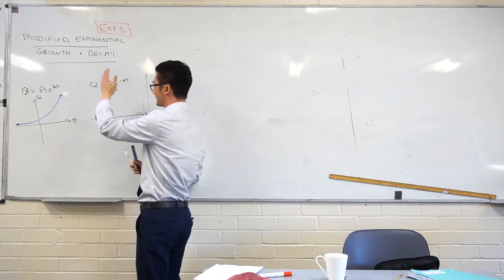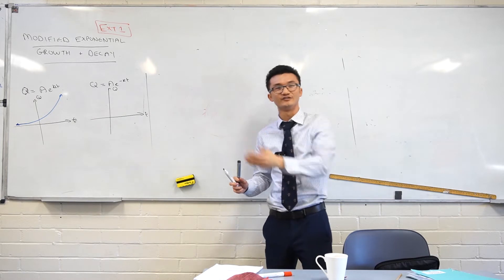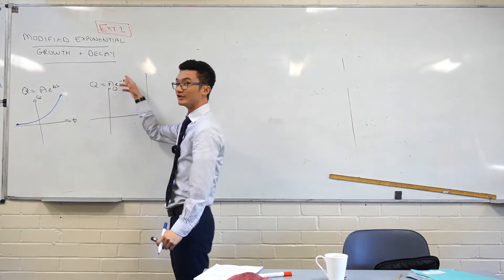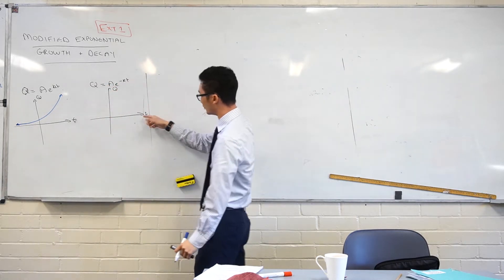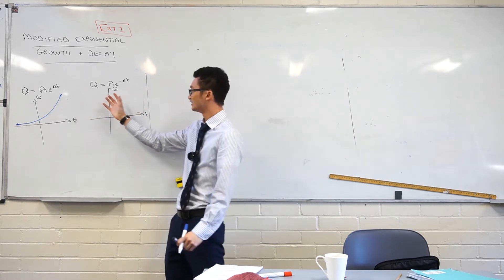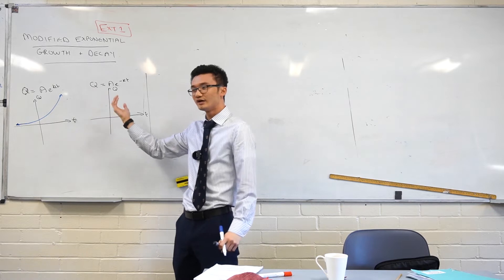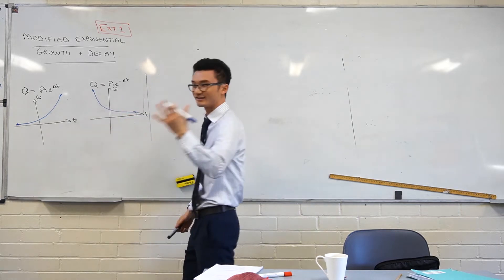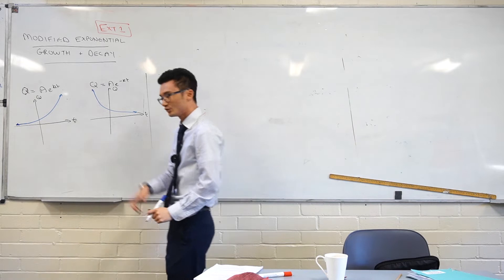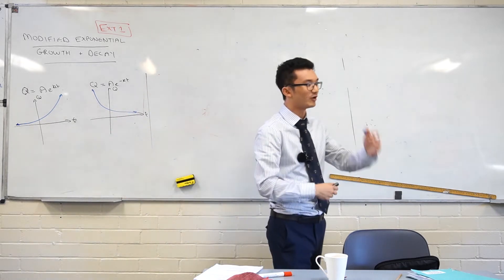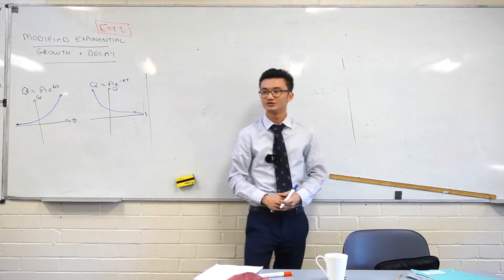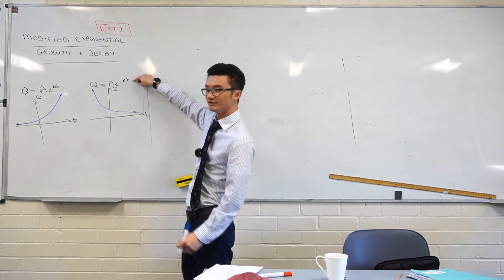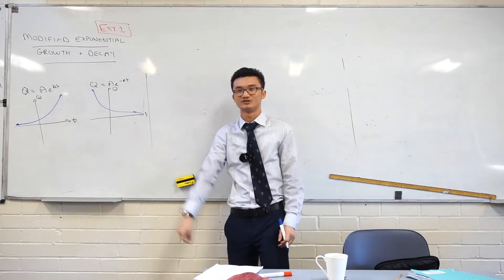Graphically, how does this change it? When I'm talking about things decaying, they start decaying very quickly, but then they kind of fall off. The rate isn't as quick anymore. Thinking about your manipulations in the Cartesian plane, if I have a negative attached to this t variable, it's a reflection in the vertical axis or Q axis here.